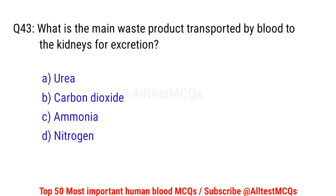Question number 43. What is the main waste product transported by blood to the kidneys for excretion? Correct option is A. Urea.